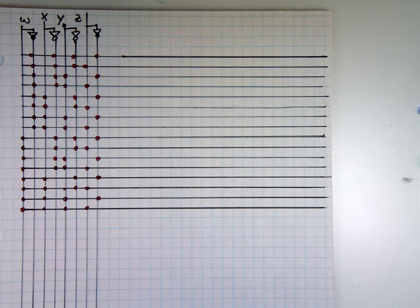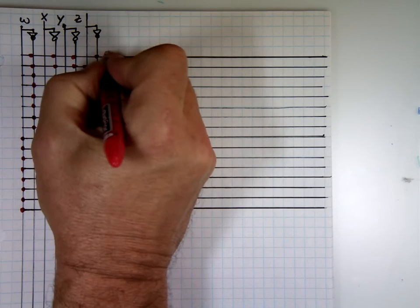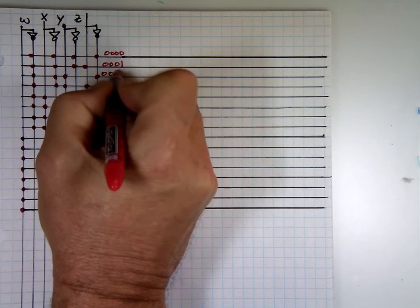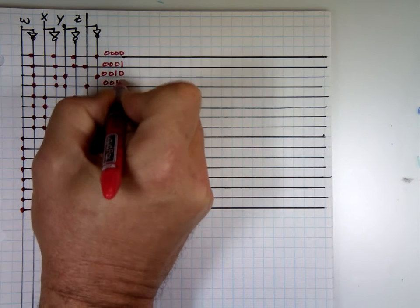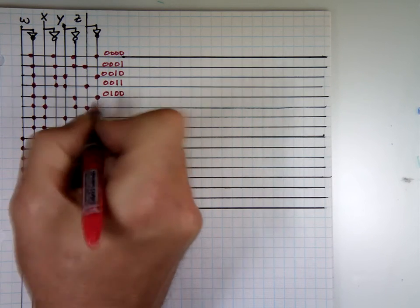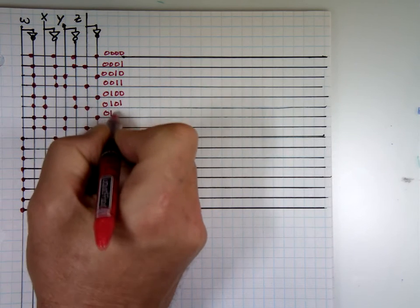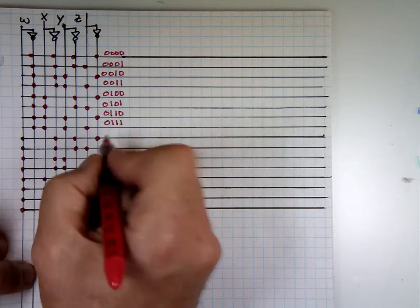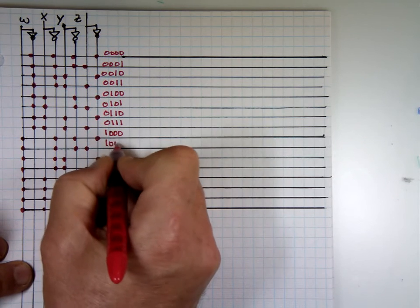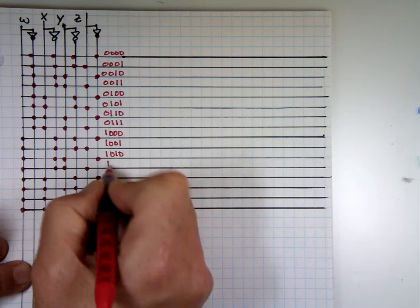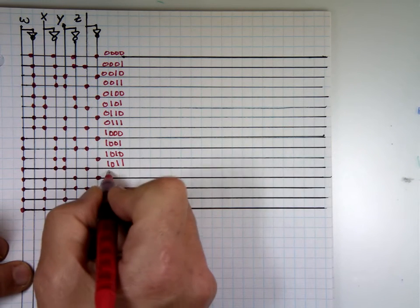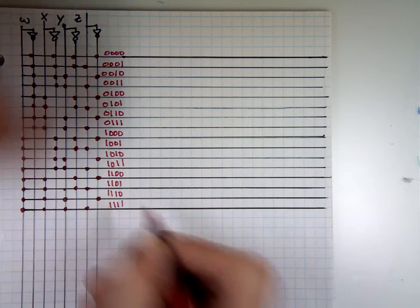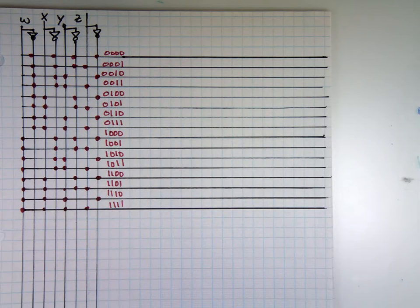When you have 16 combinations, address zero is zero-zero-zero-zero, then zero-zero-zero-one, zero-zero-one-zero, zero-zero-one-one, zero-one-zero-zero, zero-one-zero-one, zero-one-one-zero, zero-one-one-one. Then one-zero-zero-zero, one-zero-zero-one, one-zero-one-zero, one-zero-one-one, one-one-zero-zero, one-one-zero-one, one-one-one-zero, and one-one-one-one. Instead of labeling like this with text, we draw this notation with dots where they attach.